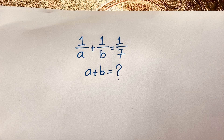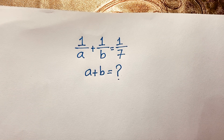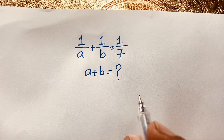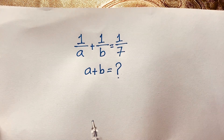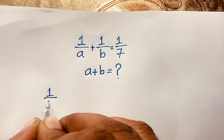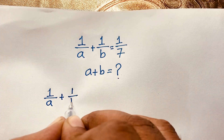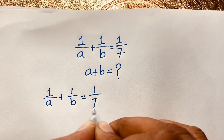Hello everyone. In this video we solve a nice algebraic question: 1 over a plus 1 over b is equal to 1 over 7, and a plus b is equal to what? Let's look at the solution. Our question is: 1 over a plus 1 over b is equal to 1 over 7.